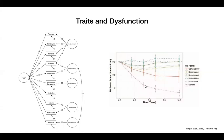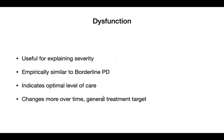Once you accounted for that, the traits stayed pretty stable — suggesting that a person's personality traits don't really change a lot, even with treatment. What changes is their ability to adapt to their world, to fit those traits into their environment in such a way that doesn't lead to problems. As a clinician treating people with personality disorders, I'm not trying to make an introverted person extroverted; I'm trying to help them adapt their personality so it doesn't create problems for themselves or others.